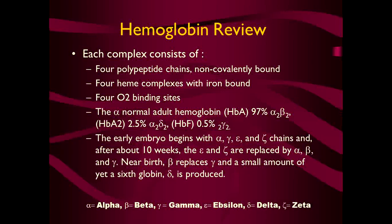Each hemoglobin complex consists of four polypeptide chains and four heme complexes with iron bound and four oxygen-binding sites. Normal adult hemoglobin A has 97% alpha-2 beta-2 chains; HbA2 is only 2.5% with alpha-2 and delta-2 chains; and HbF is only 0.5% with alpha-2 and gamma-2 chains. The early embryo begins with alpha, gamma, epsilon, and zeta chains, and at about 10 weeks the epsilon and zeta are replaced by alpha, beta, and gamma chains. Near birth, beta replaces gamma and a small amount of delta globin is produced.